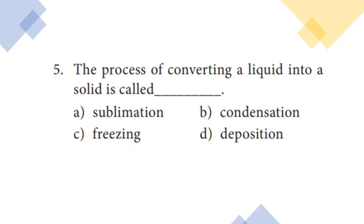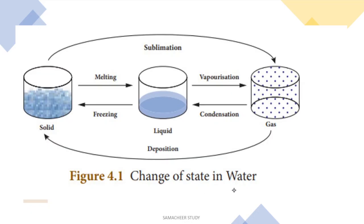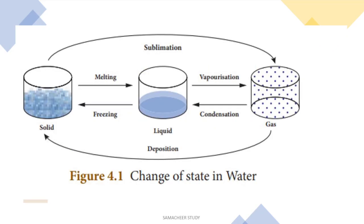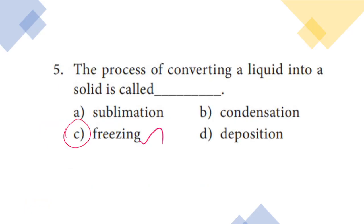Fifth question: what is the process of converting liquid into a solid? From the textbook diagram, the change of state names are clear — solid to liquid is melting, liquid to gas is vaporization. So liquid to solid is called freezing. Option C is the right answer.